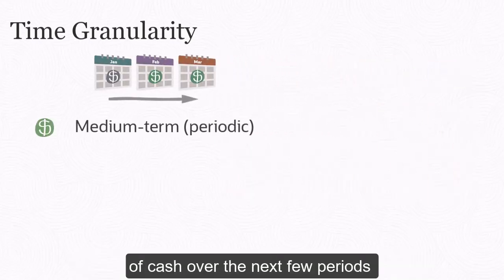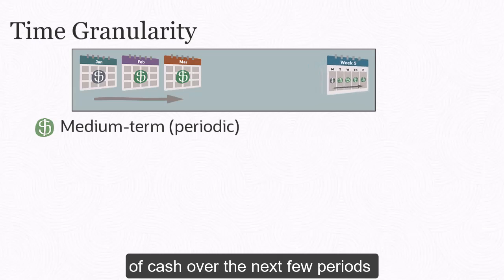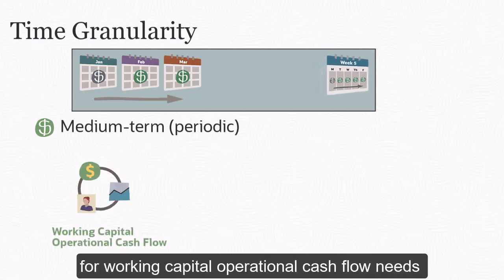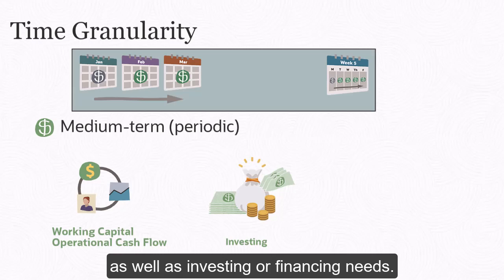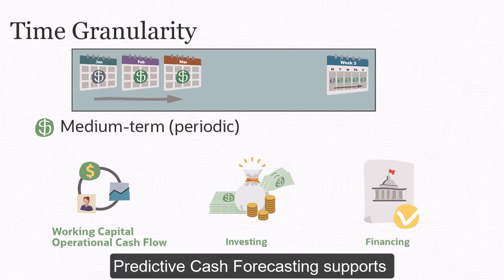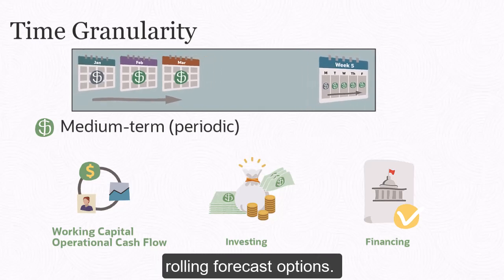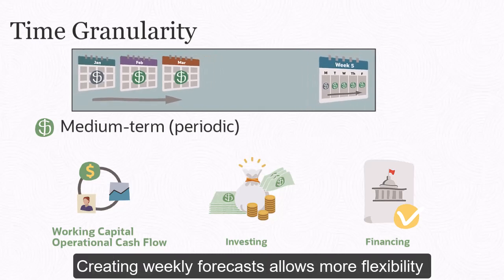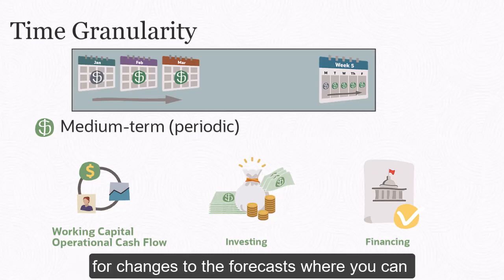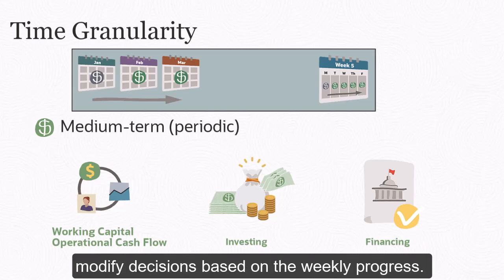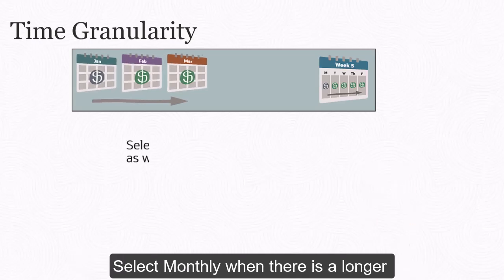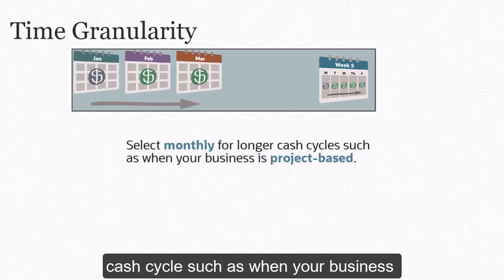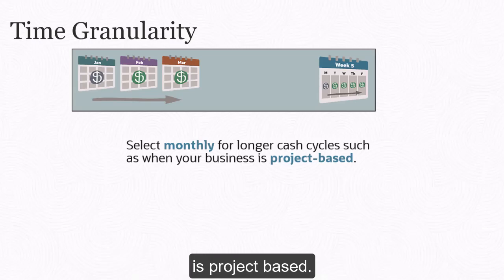The medium-term forecast focuses on the view of cash over the next few periods for working capital, operational cash flow needs, as well as investing or financing needs. Predictive Cash Forecasting supports both monthly and weekly rolling forecast options. Creating weekly forecasts allows more flexibility for changes to the forecasts where you can modify decisions based on the weekly progress. Select monthly when there is a longer cash cycle, such as when your business is project-based.